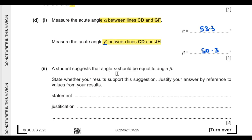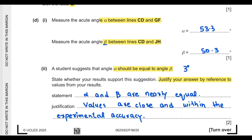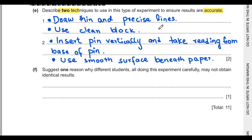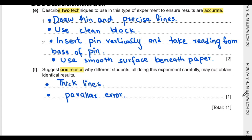A student suggests that angle α and angle β should be equal. Angle α is 53.3° and angle β is 50.3°, giving a difference of 3 degrees, which is very minor. So the values are close and within experimental accuracy, supporting the suggestion. Part E describes two techniques for accurate results: draw thin and precise lines, use a clean block, insert pins vertically and take readings from the base of the pin, and use a smooth surface beneath the paper. Different students may not get identical results because of thick lines drawn or parallax error.